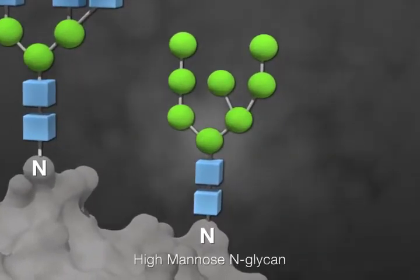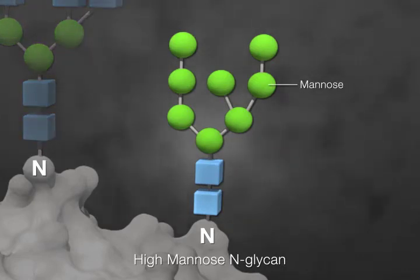N-glycans can be high-mannose, which means all the component monosaccharides are mannose residues, with the exception of the two-core N-acetylglucosamine, or GlcNAc, residues.